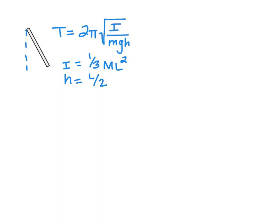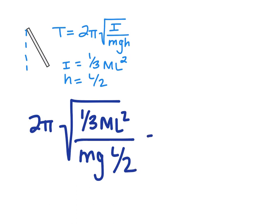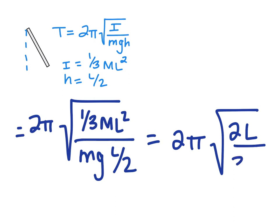Substituting gives T = 2π√((1/3)mL² / (mg · L/2)). Simplifying that down, we get T = 2π√(2L/3g), or equivalently T = 2π√((2/3)(L/g)).